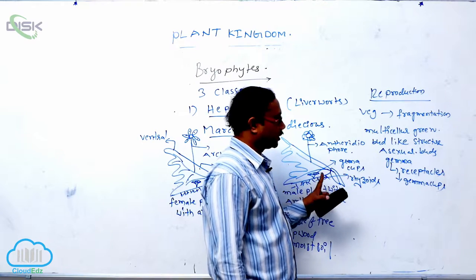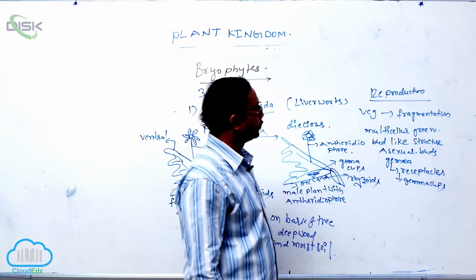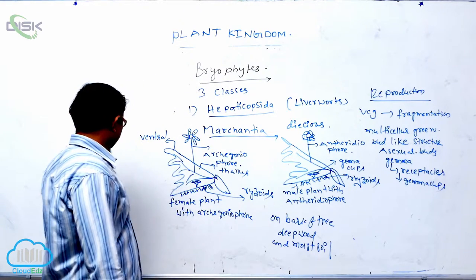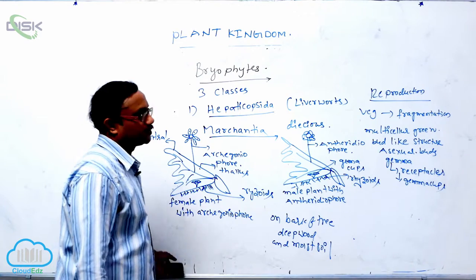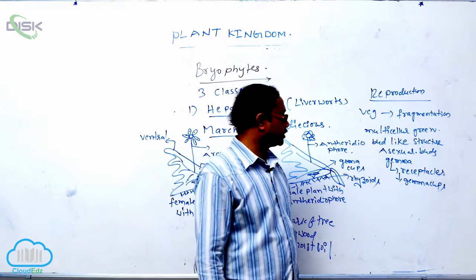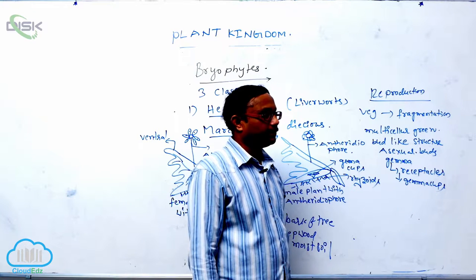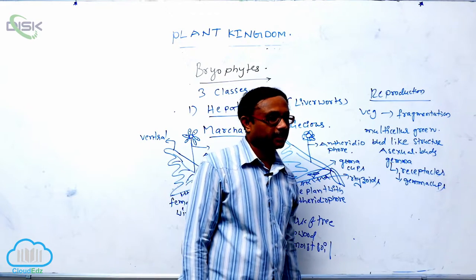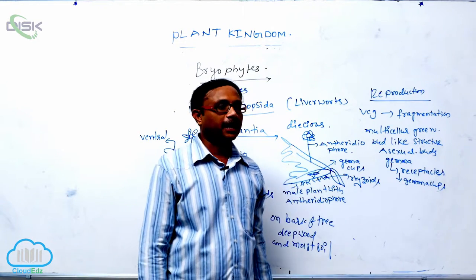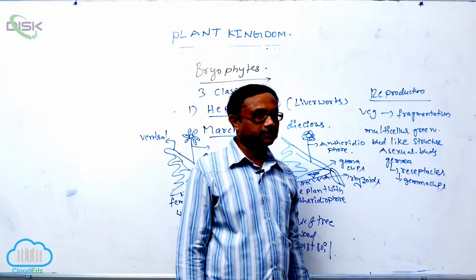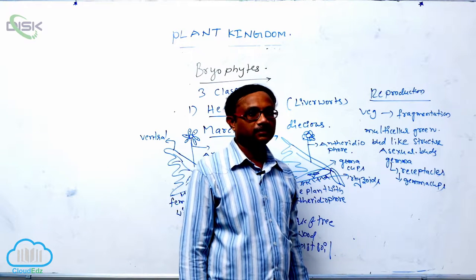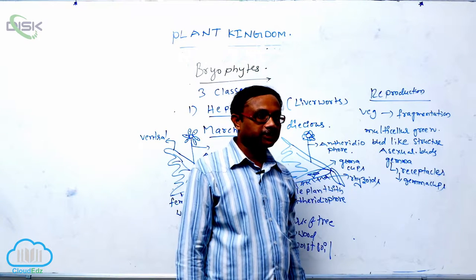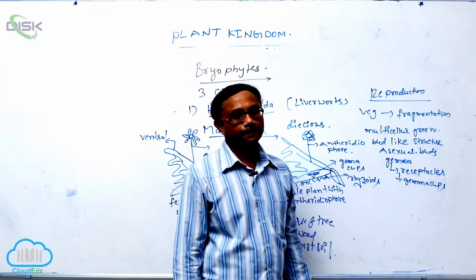The gemmae produce new plants, meaning they participate in vegetative reproduction. Sexual reproduction takes place by fusion of gametes. It is a type of oogamy. Male gametes are released from the male plant and are known as antherozoids, which are released from the antheridia. These male gametes swim in water and reach the neck of the archegonia.